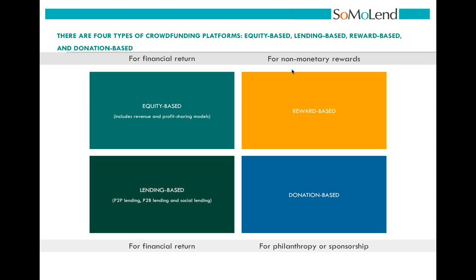The two on the right of this screen — reward and donation-based crowdfunding — are already live today. These are the types you'd already see on Kickstarter, Indiegogo, Rocket Hub, peer backers, and others. This allows you to donate your money or pre-purchase a product, but it does not allow you to get any kind of return on your investment. The other two forms — equity-based and lending-based — do provide a return on investment, and I'll go into each in more detail.